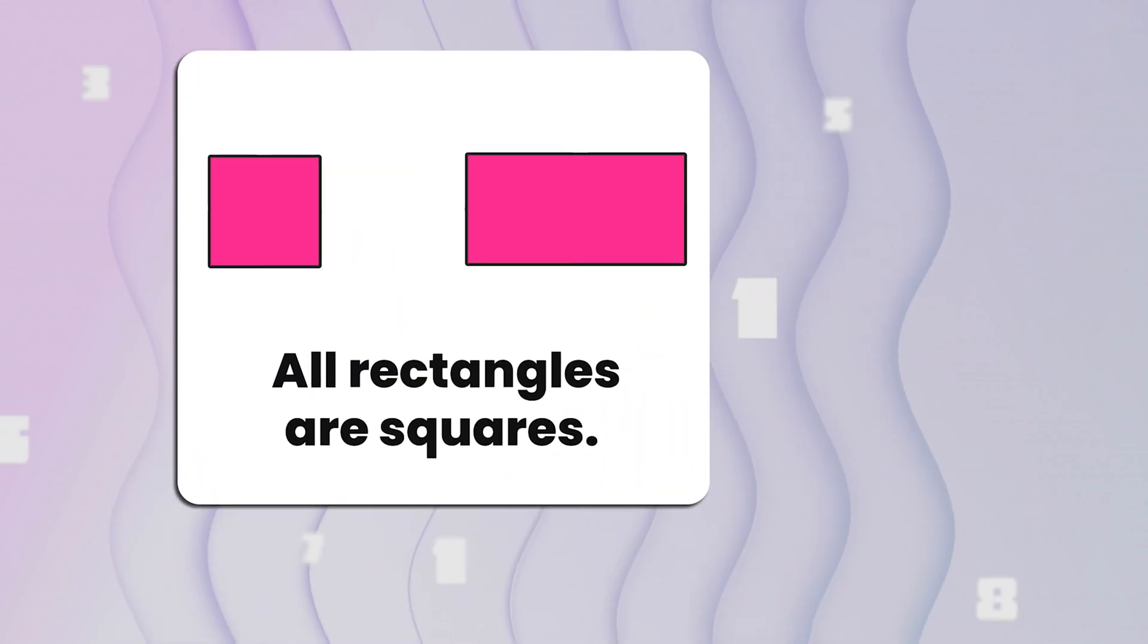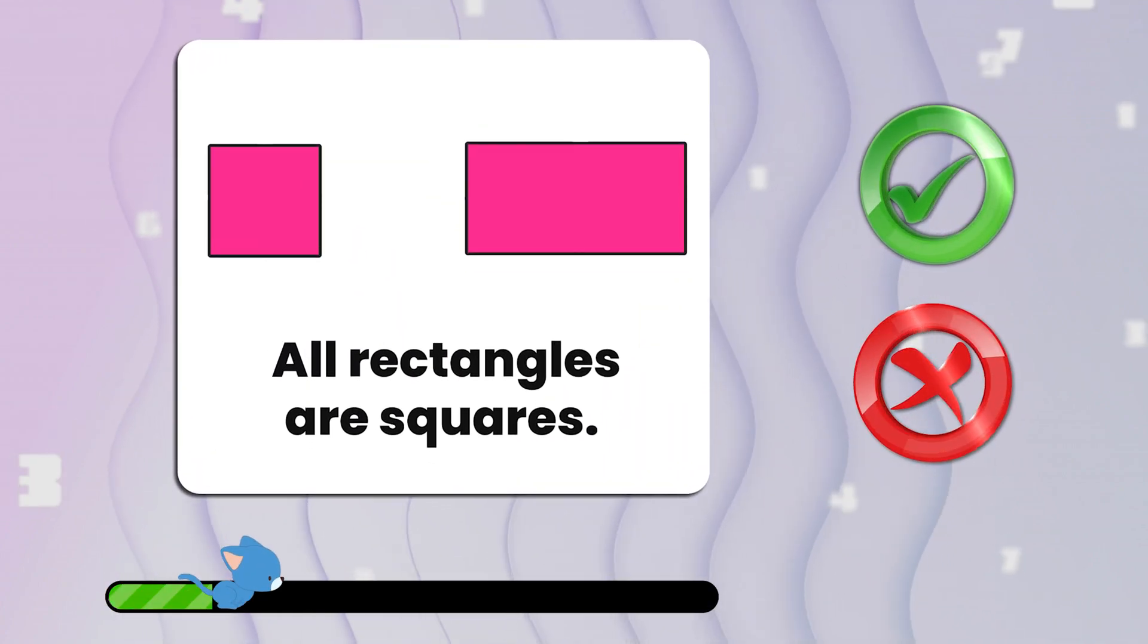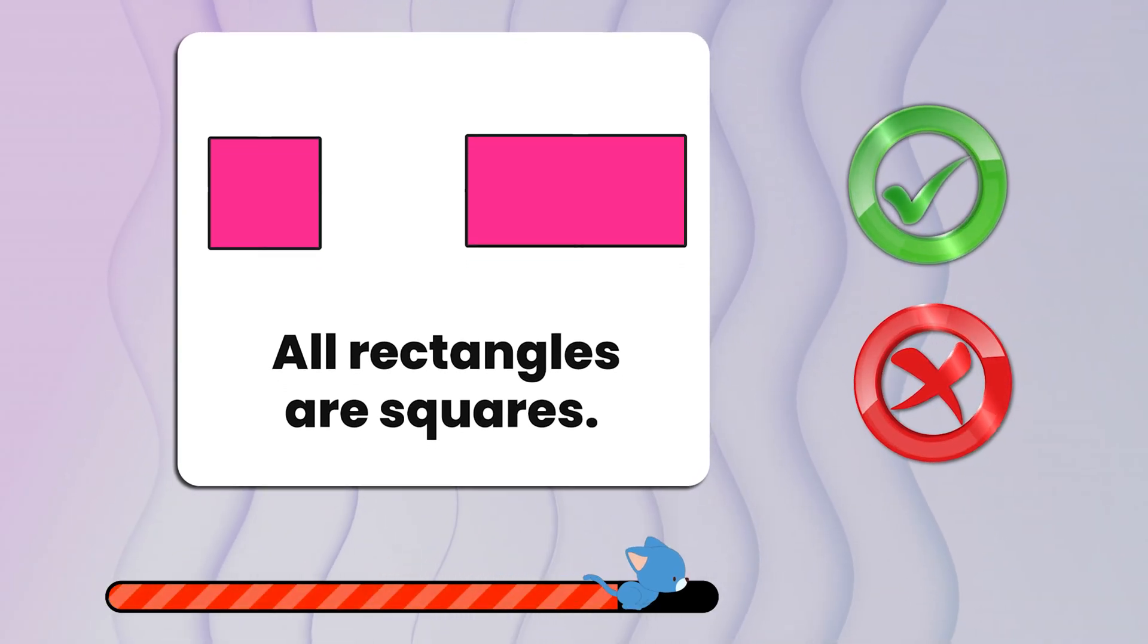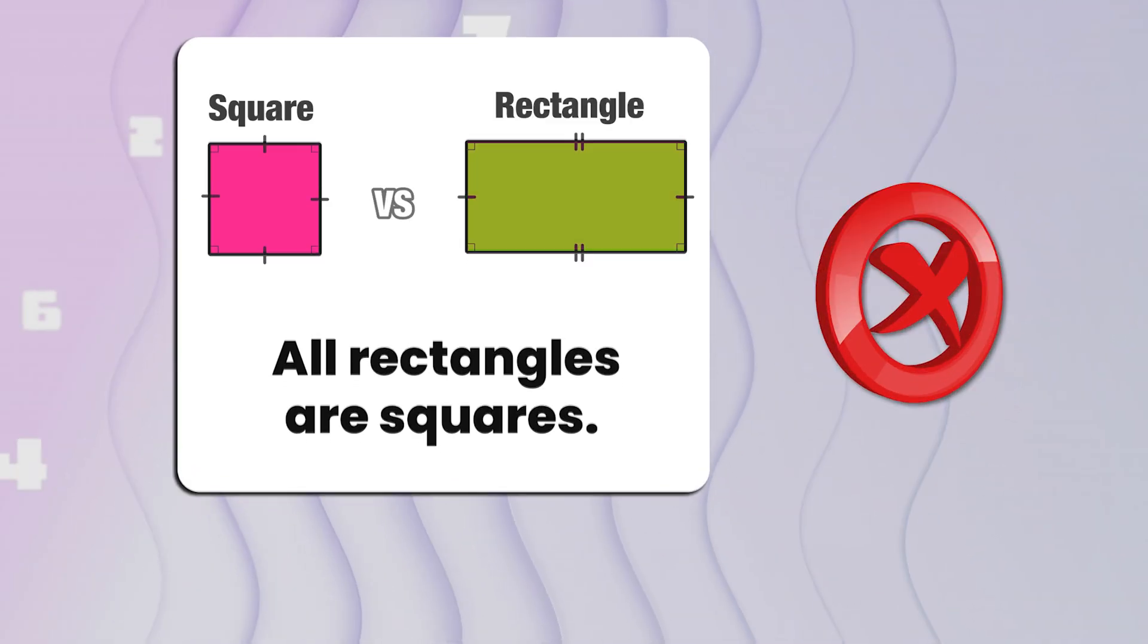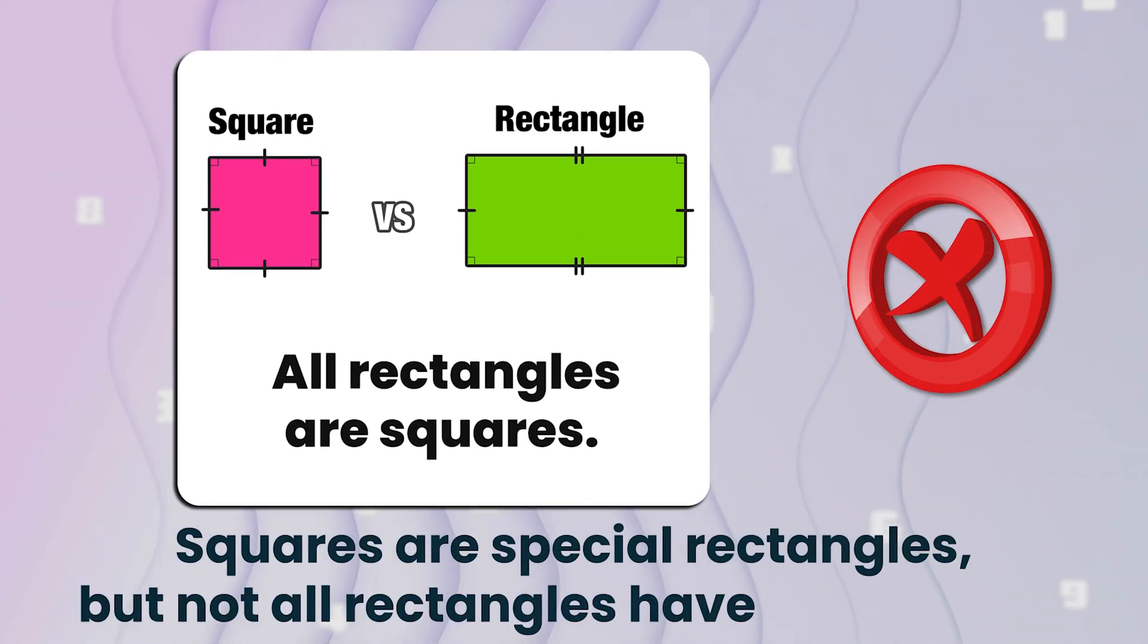Number two. All rectangles are squares. True or false? That's false. Squares are special rectangles, but not all rectangles have equal sides.